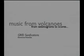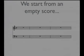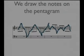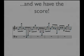So we start from an empty musical score, as you can see in this slide. And on this score we superimpose the shape of the seismogram. This is the oscillation of the volcano, and according to the shape of the oscillation we put notes on the pentagram. And so what we have is the melody, and we can even listen to it right now.